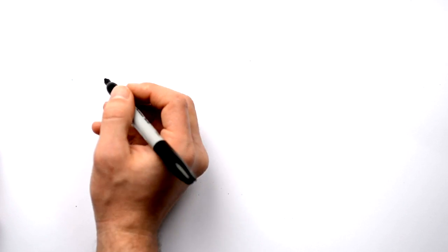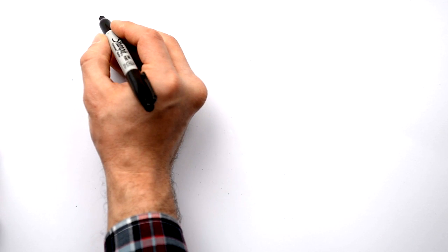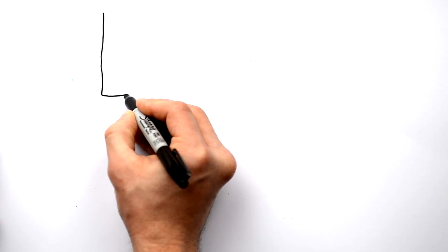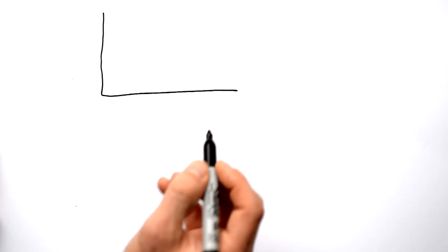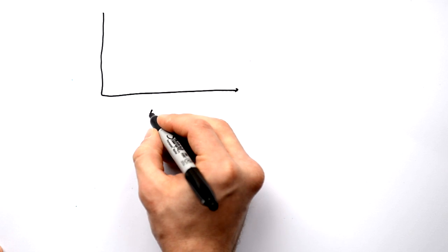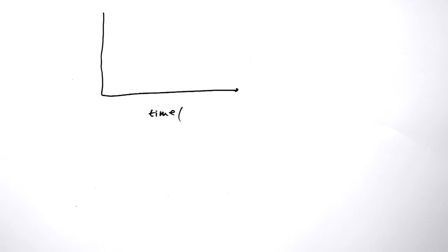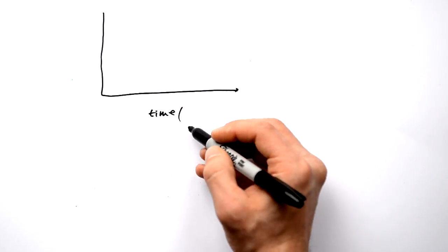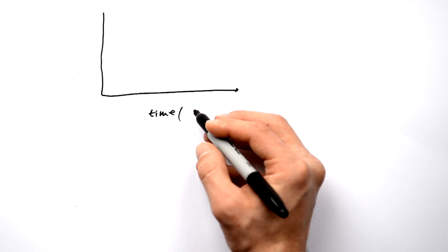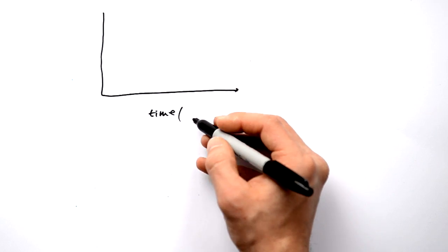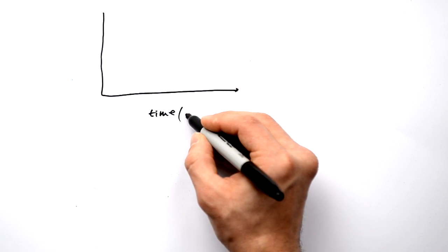So we can represent this on a graph. Time is along the bottom — it can be in any units; chances are it's not going to be in seconds because half-lives are usually a lot longer. This might be hours, or even days, or even years. We're going to go for days.